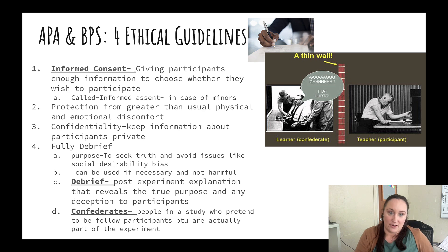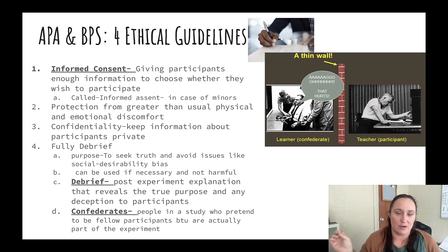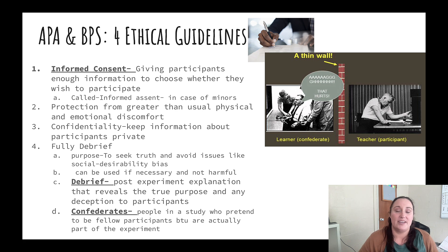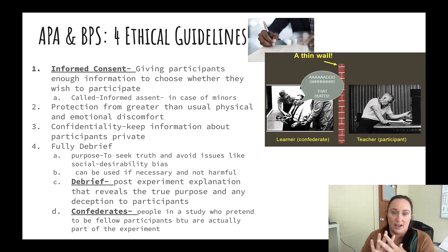When we look at human ethical guidelines, there are four you need to know. Number one is informed consent — giving participants information on the procedure, how much time it will take, and any discomfort they might experience, such as running up and down stairs or taking a paper-and-pen test. If a participant is a minor, it's called informed assent, and a parent or guardian must sign. Number two is protection from greater than usual physical and emotional discomfort. Number three is confidentiality — your data can be used, but it cannot be tied to your personal information; your individual results are kept confidential.